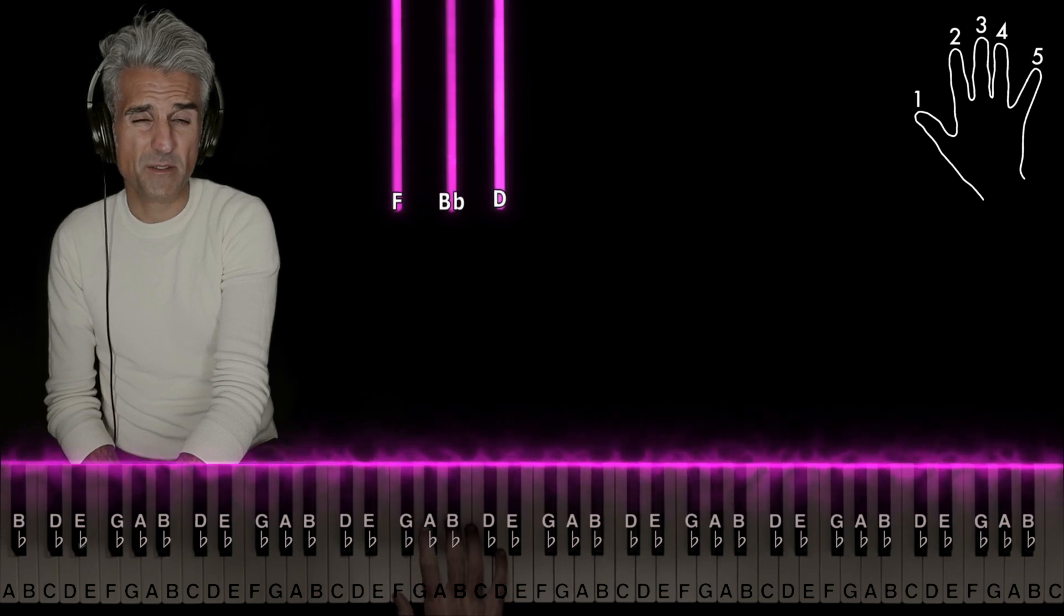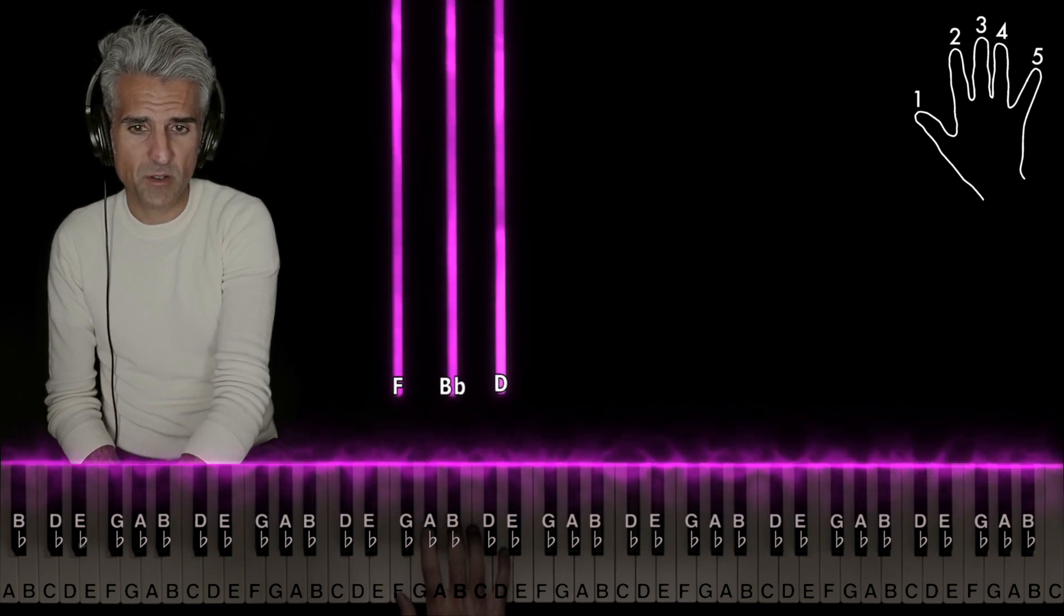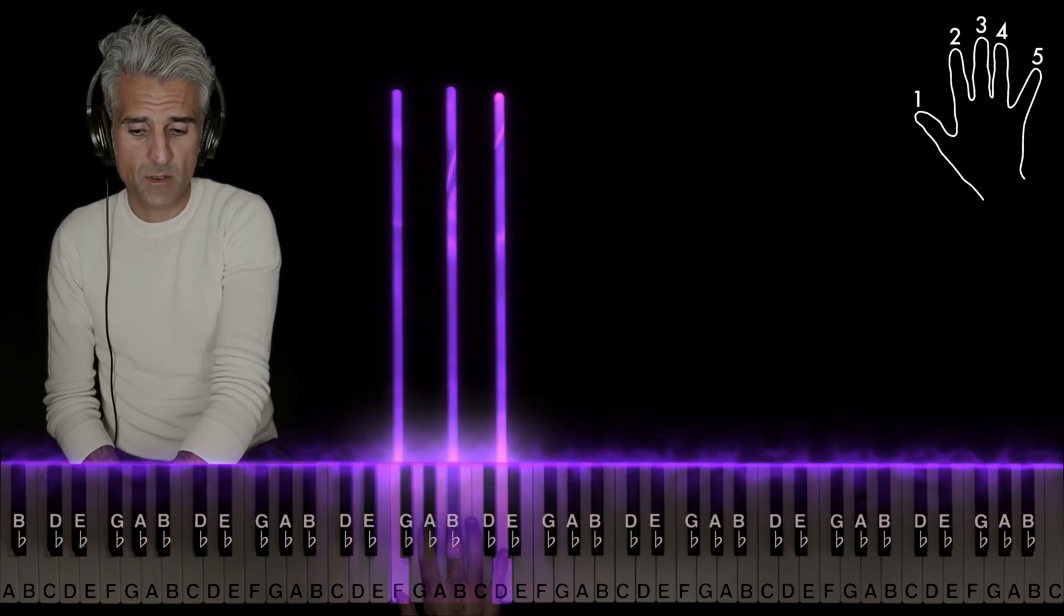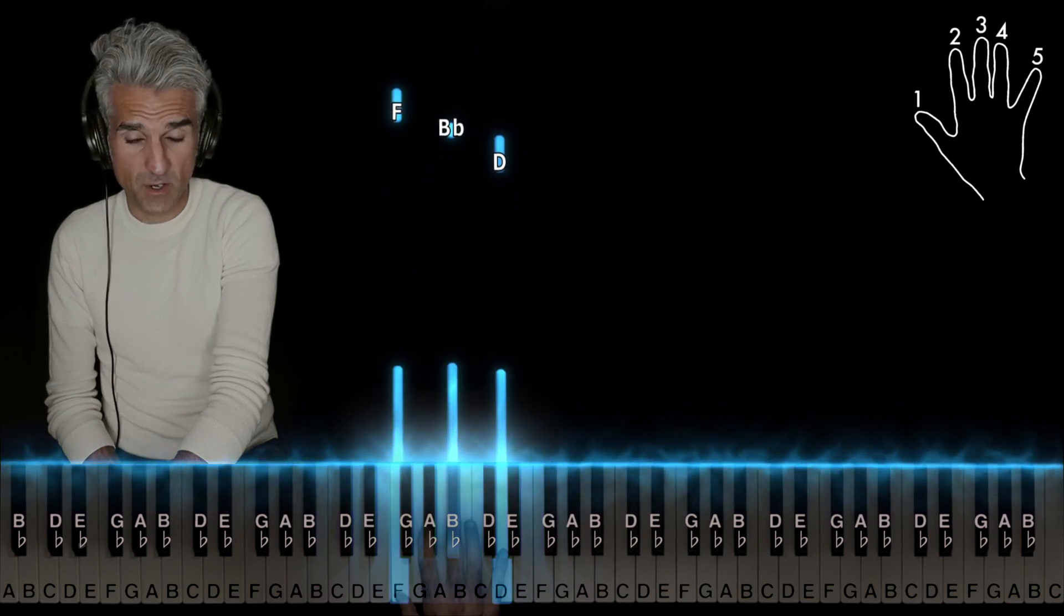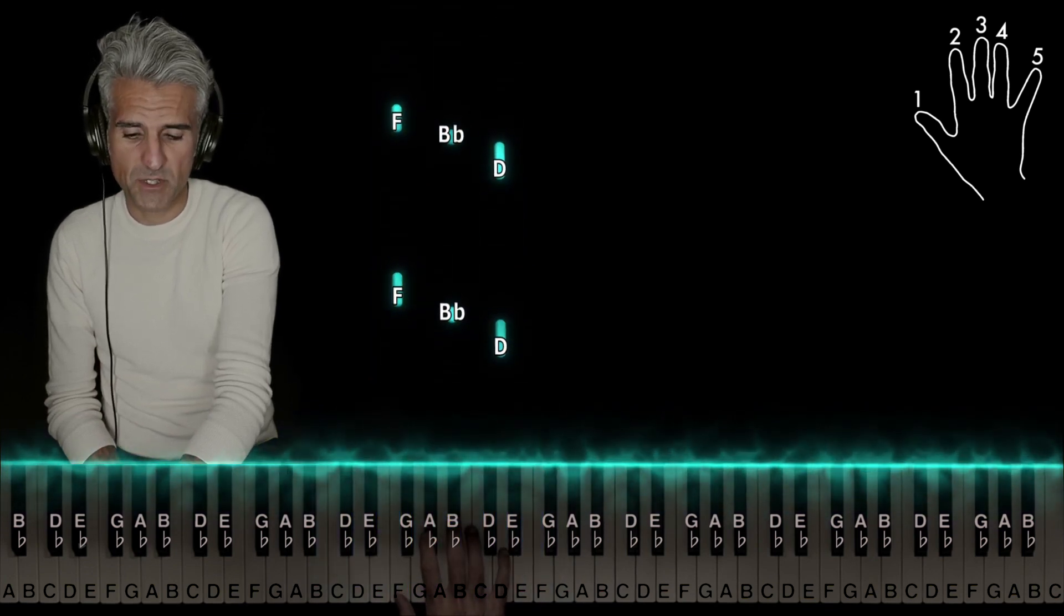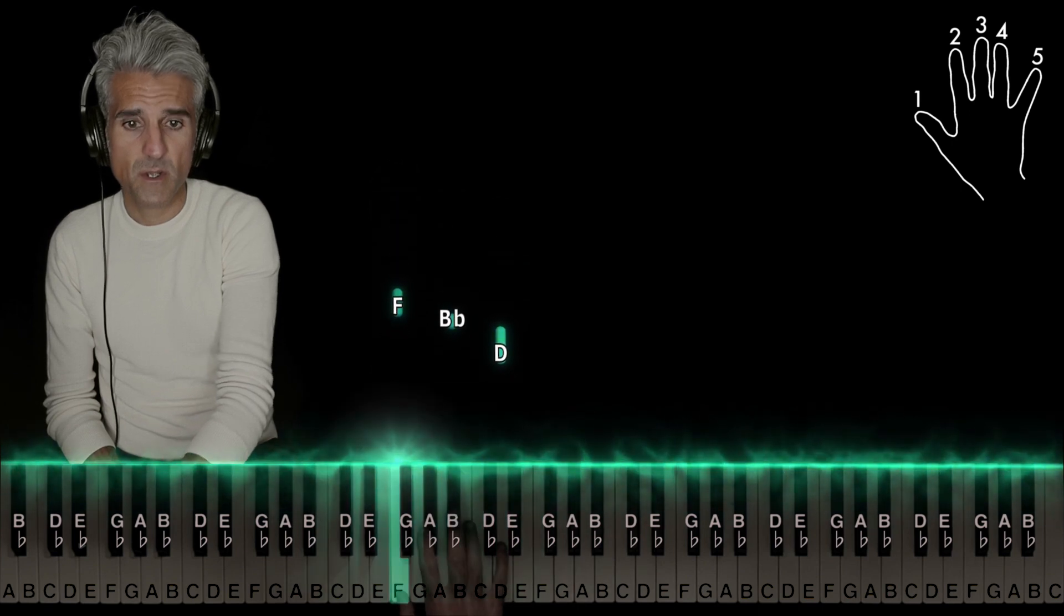Then almost exactly the same shape, but with the black key in the middle. Using five, three, and one, you're going to play this chord. This is B-flat major second inversion. Do it twice.